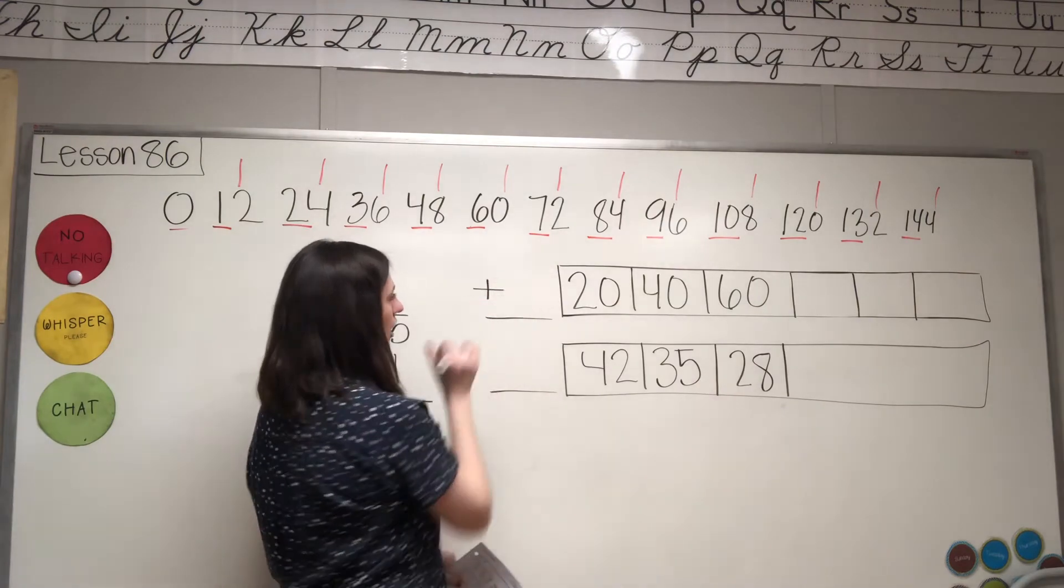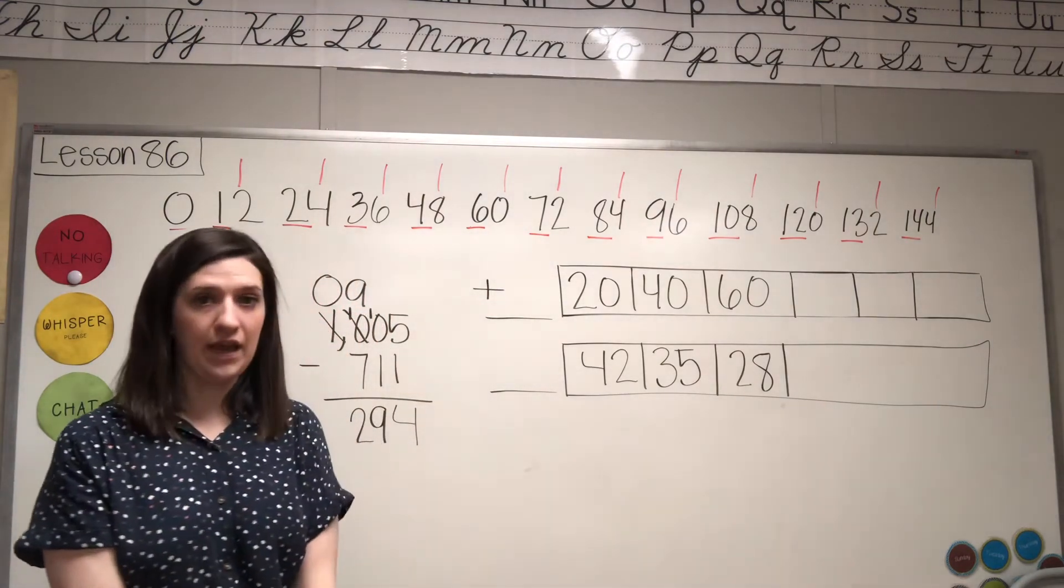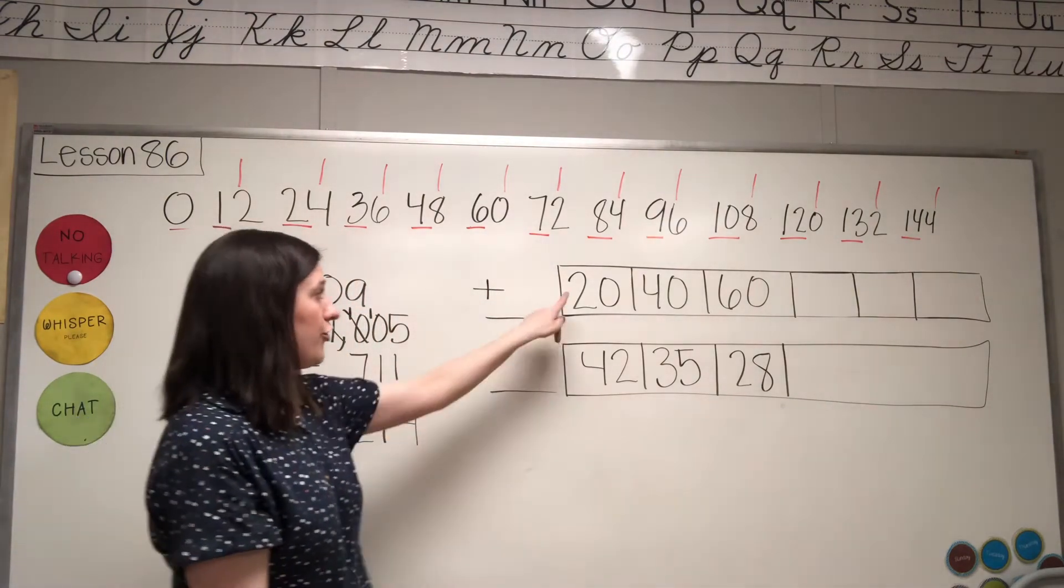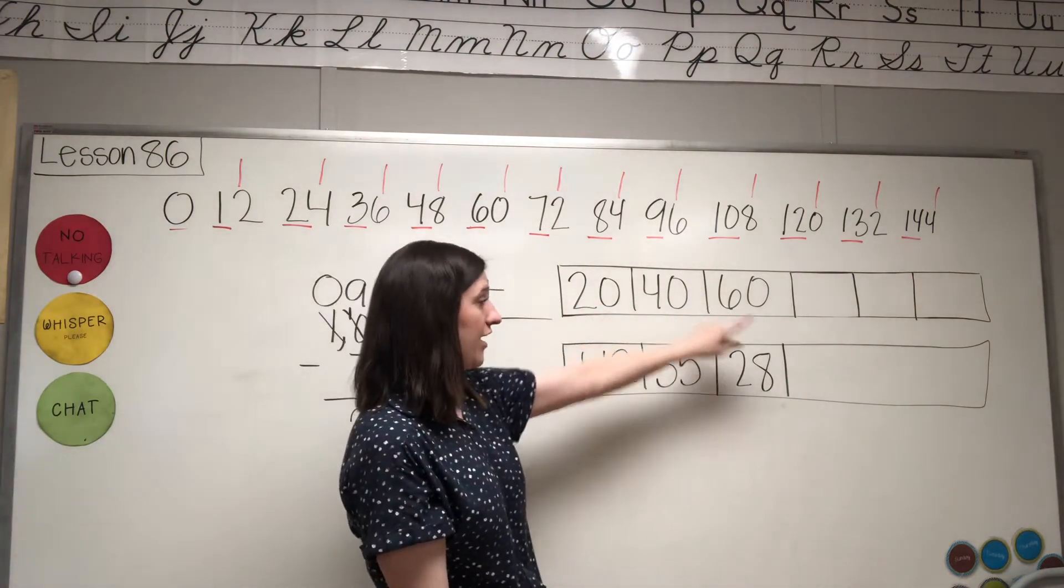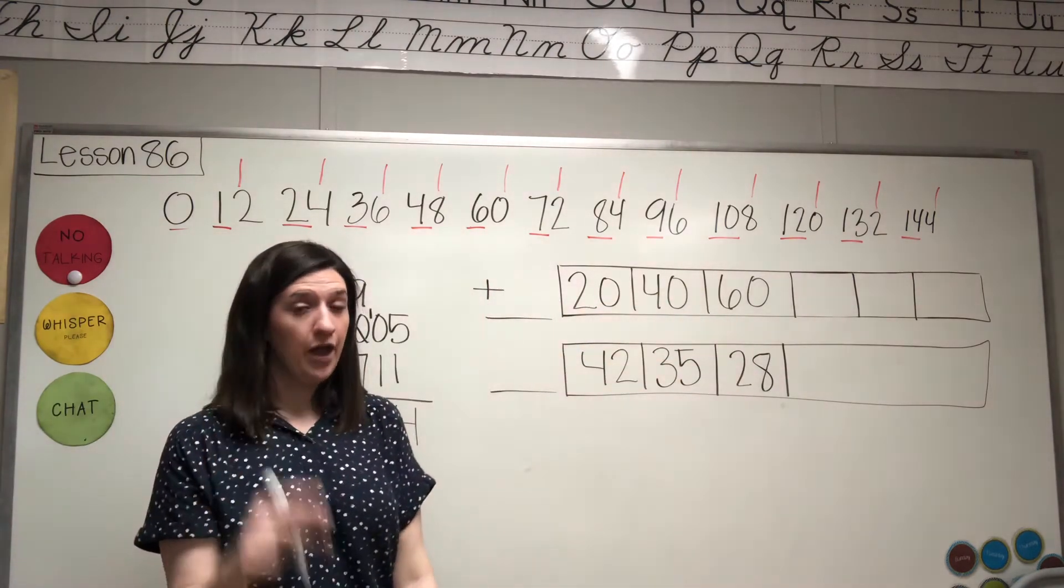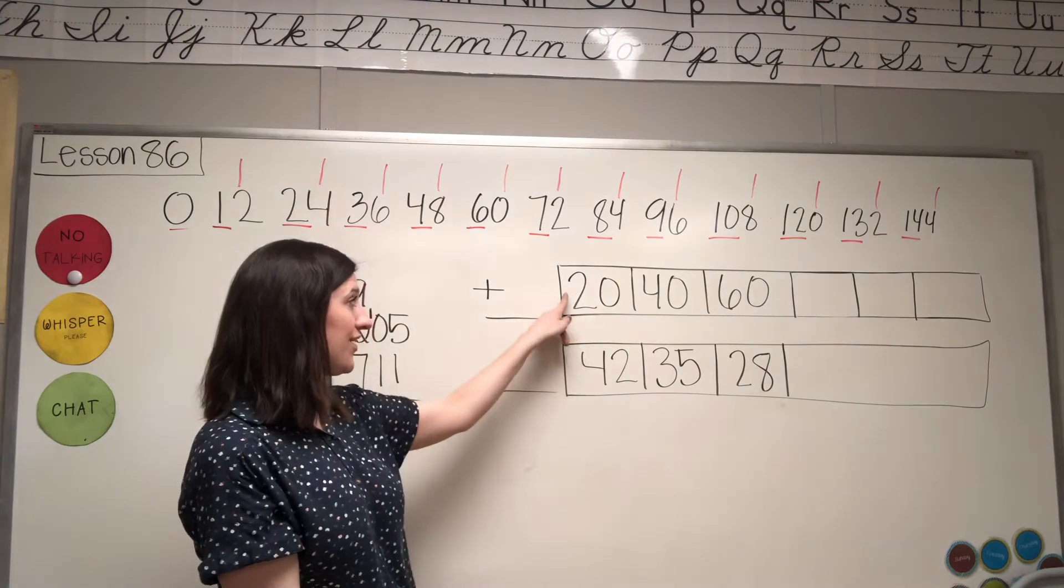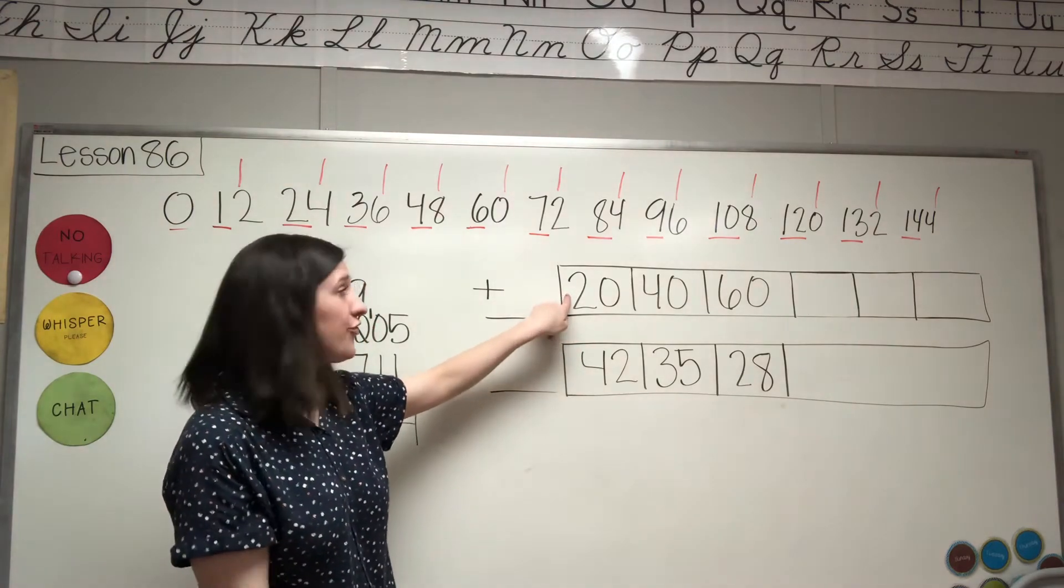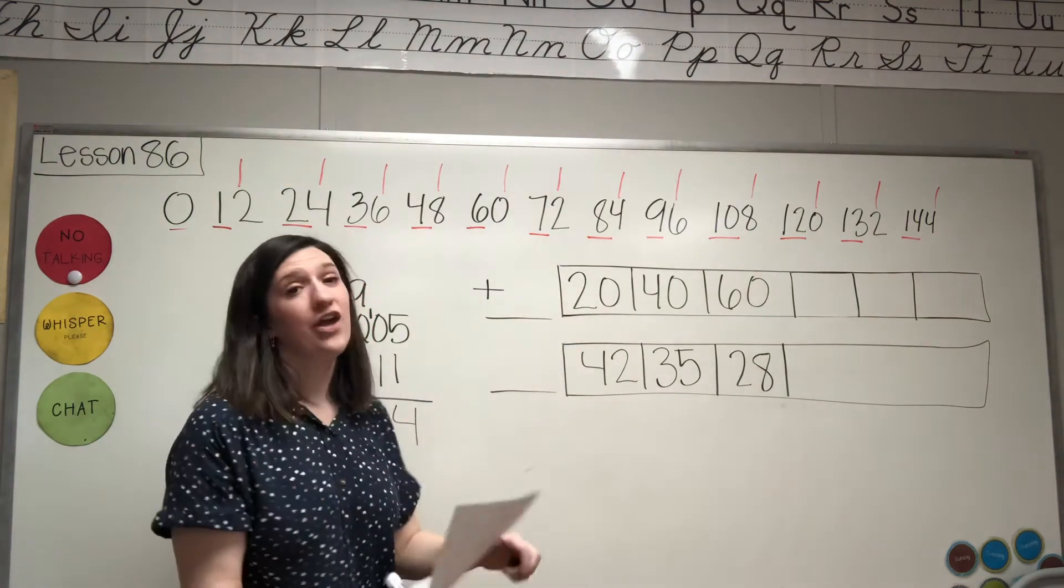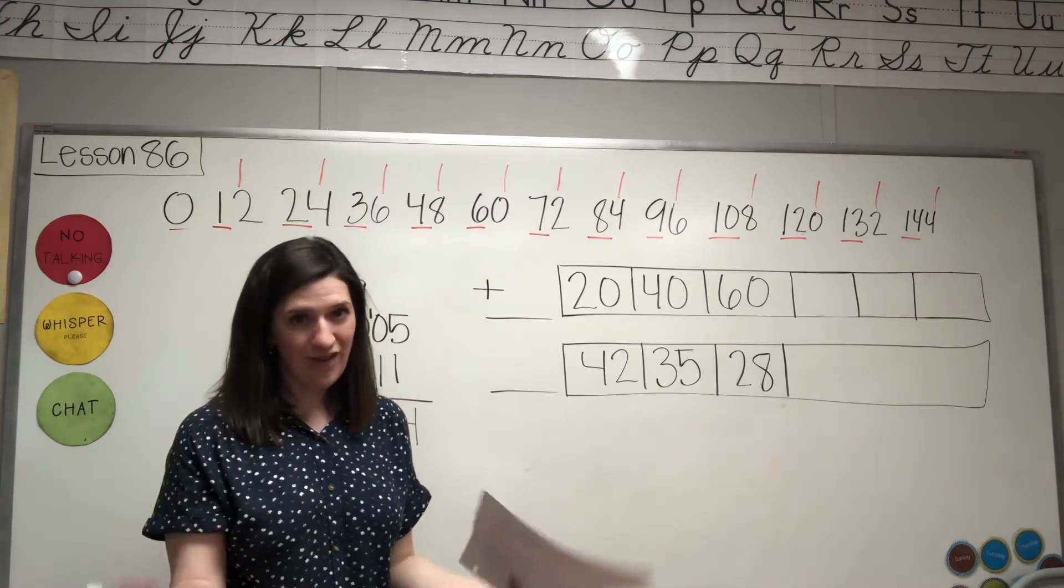And then I have to figure out what is getting bigger by: 2, 4, 6. So that's a count by 2s pattern, but your count by 2s is in the tens place, so this is actually going to be count by 20s.